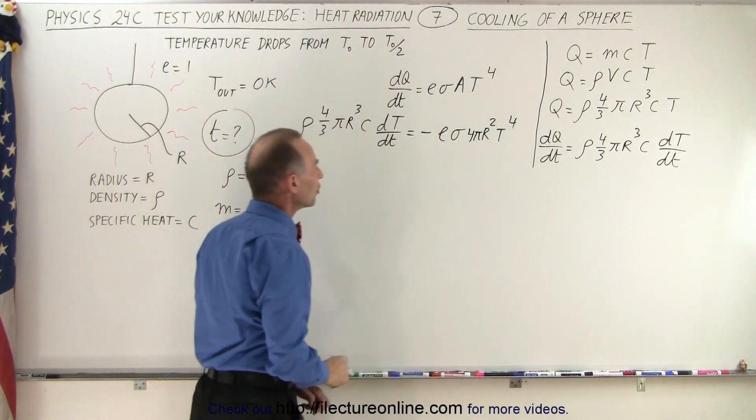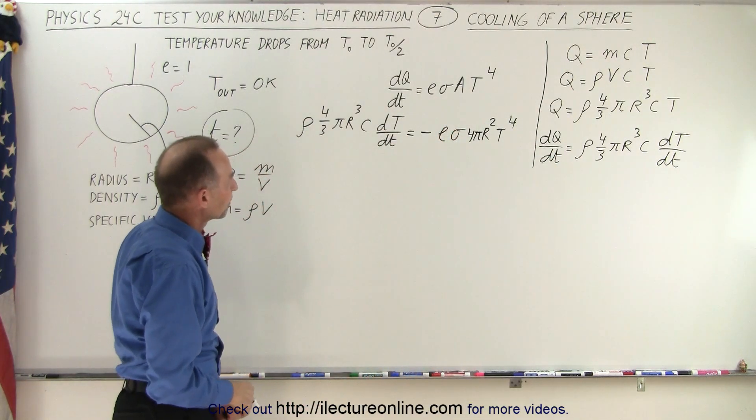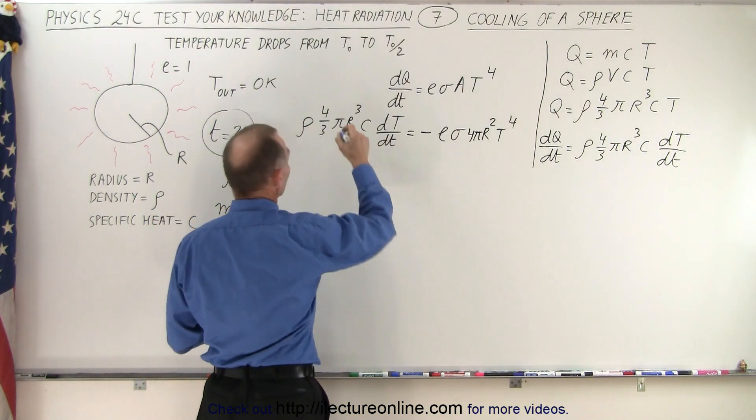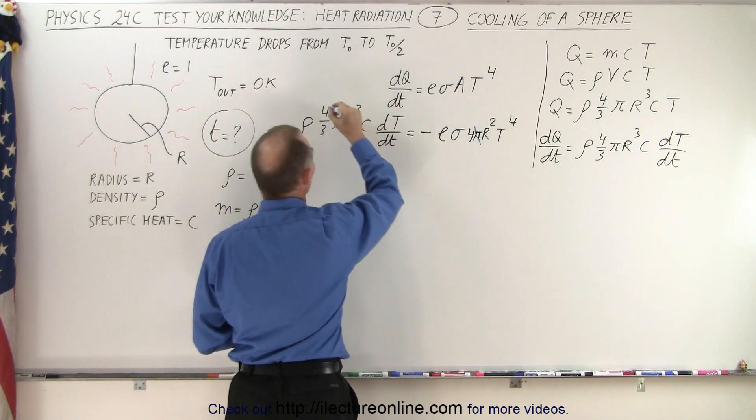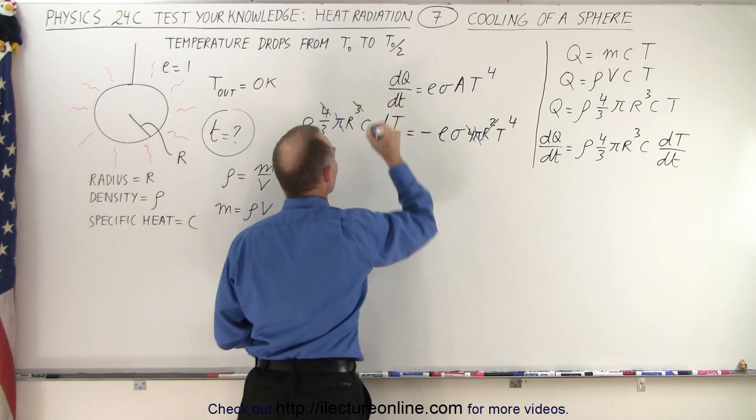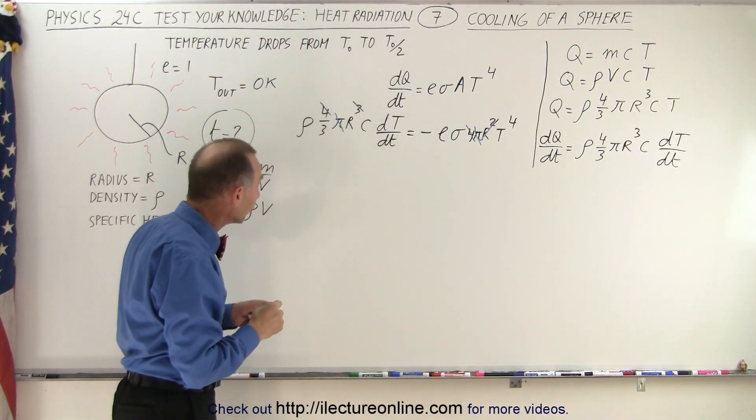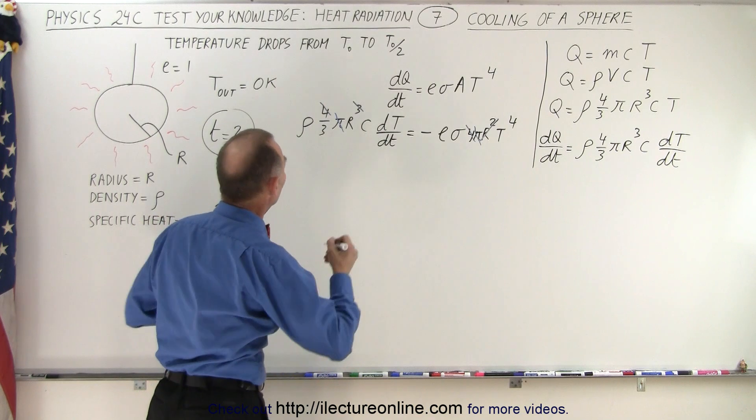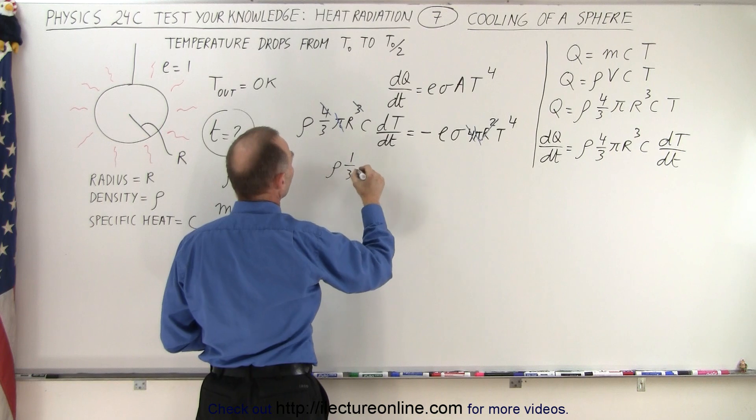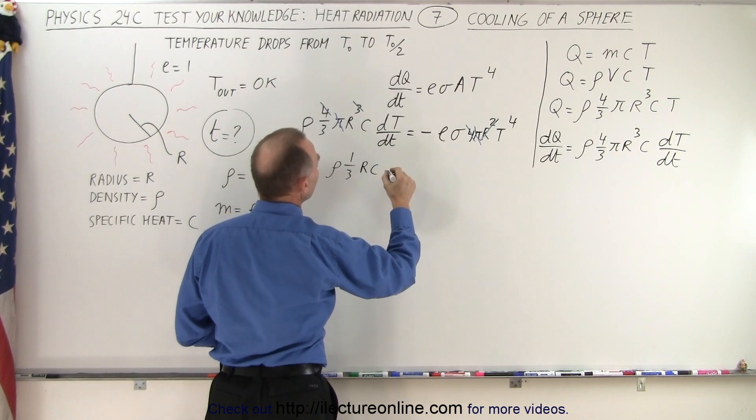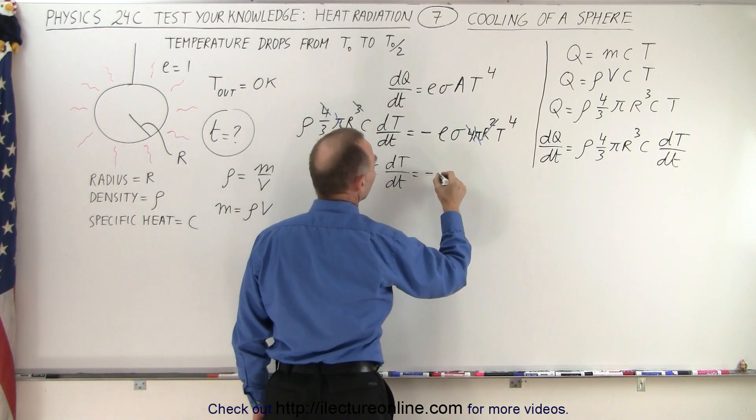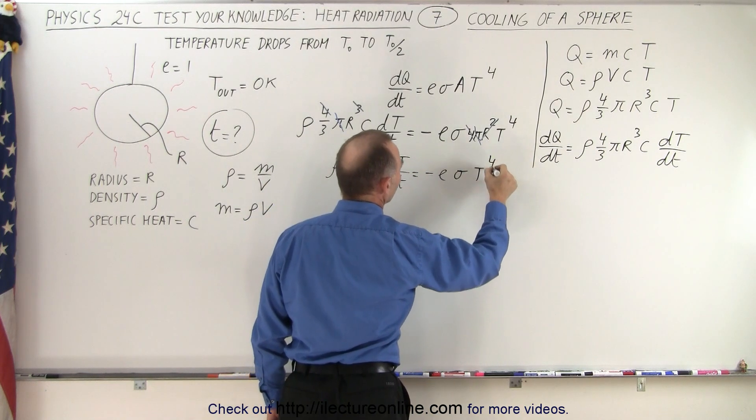So let's see, we have π on both sides, so we can cancel some things. We have π on both sides, we have 4 on both sides, we have R³ and R², so R² cancels out two of those. So let's now look at our simplified equation. We have ρ times 1/3 times R times C times dT/dt equals -εσT⁴.